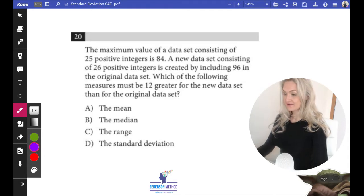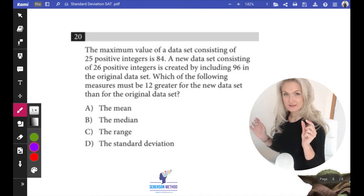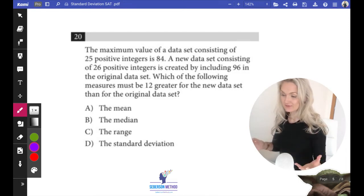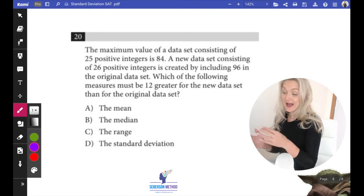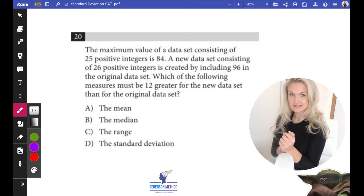All right, we have a data set with 25 data points, and the greatest is 84. And then we make some adjustments to that data set. Now we change the greatest. We add one more value, and the greatest now becomes 96.